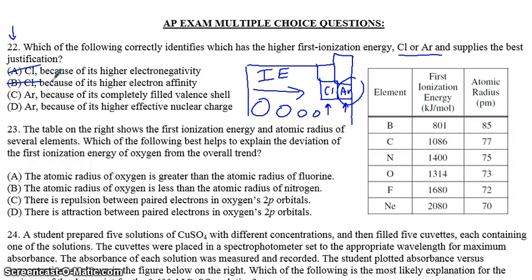Now part C says because of its completely filled valence shell. This is true. The valence shell of argon is completely filled because it's a noble gas. However, that is not why it's so tough to remove its electrons. The better answer would be this buzzword, effective nuclear charge. It has a higher effective nuclear charge.